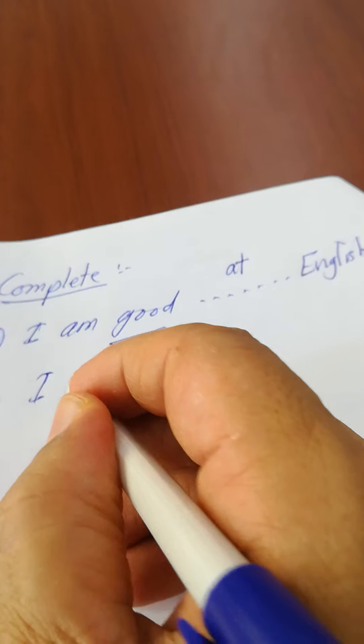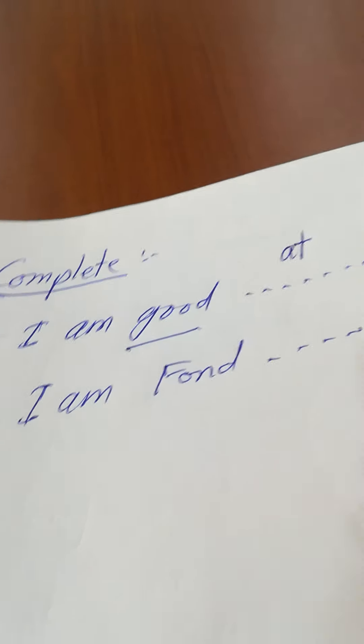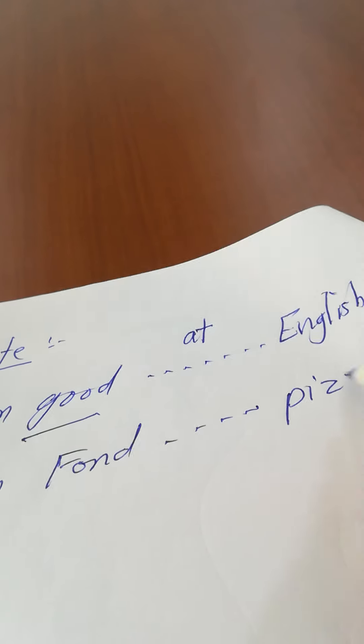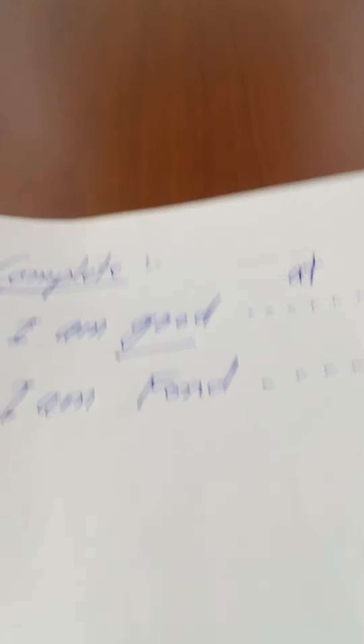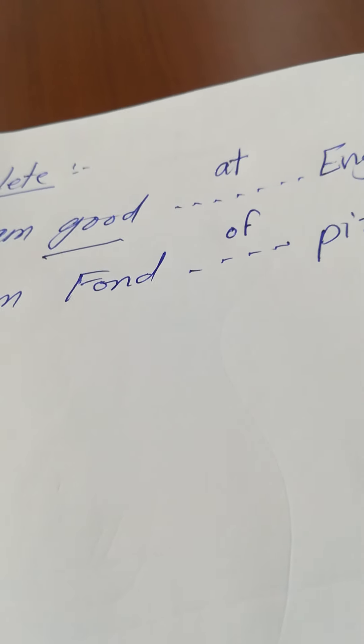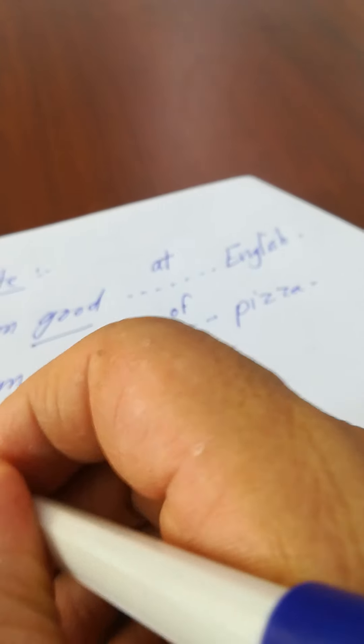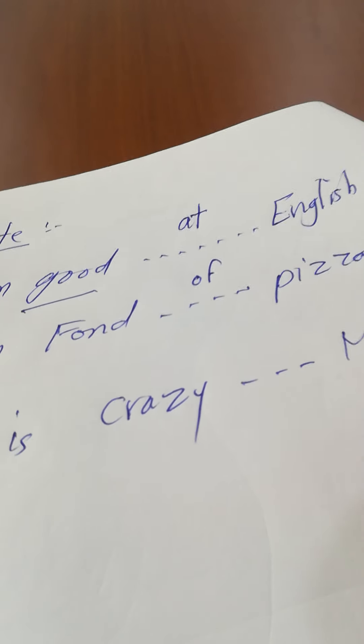Number two: I am fond space pizza. What is the right preposition here? I am fond of, I am fond of pizza. Number three: Ali is crazy space math. Ali is crazy about.